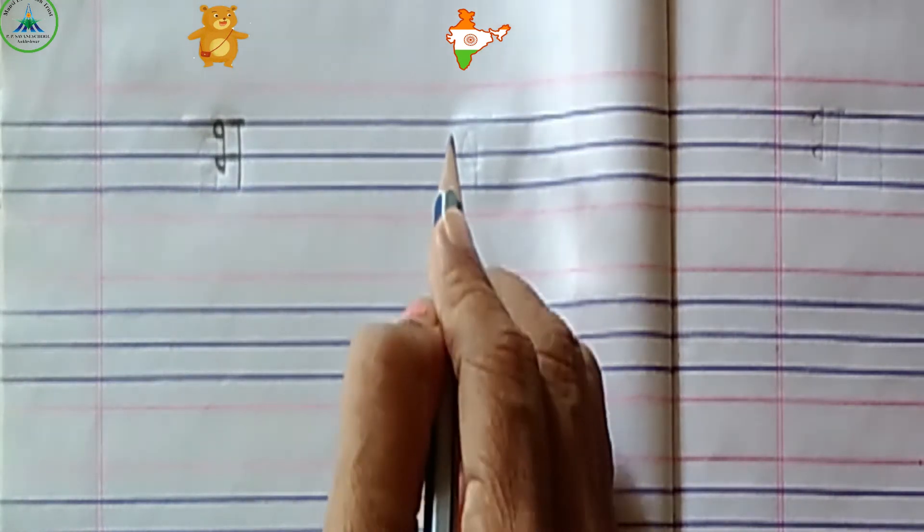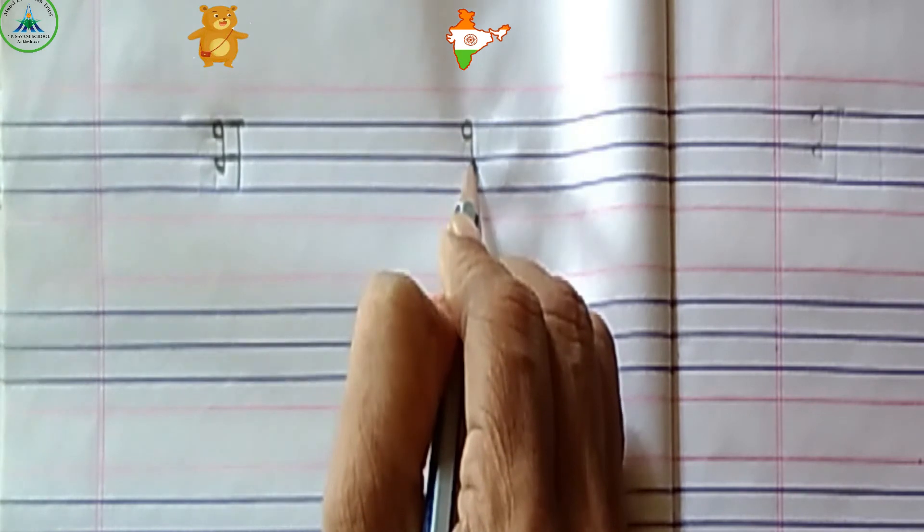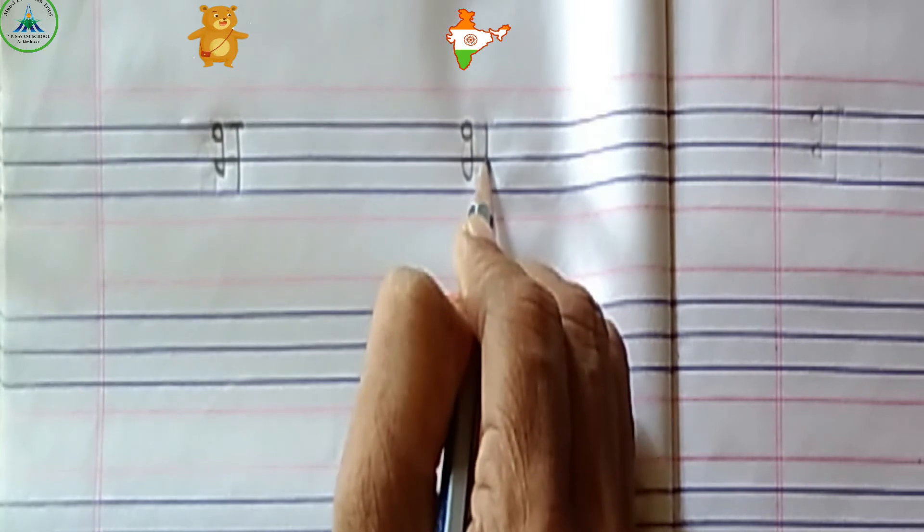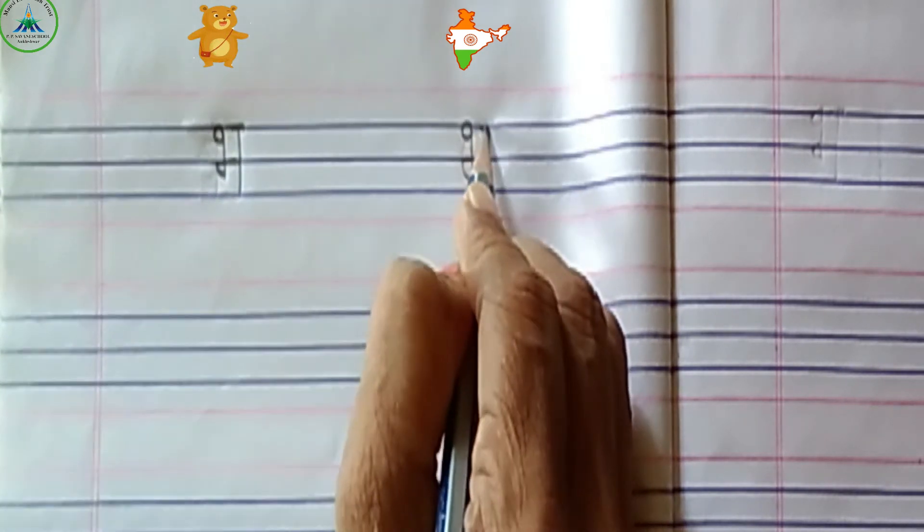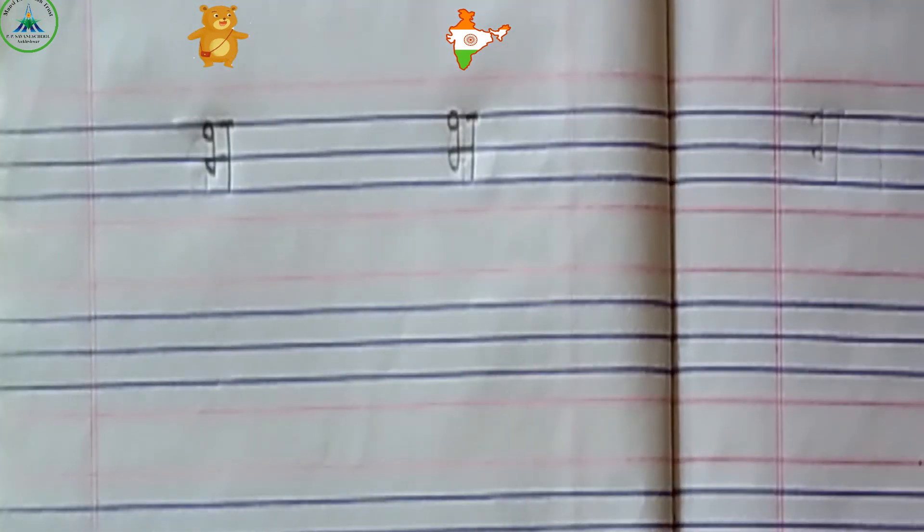One more time. Look at here. Circle, standing line, again circle, sleeping line, standing line and small sleeping line.